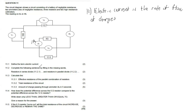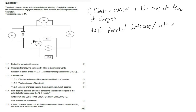Then 11.2 says complete the following sentence by filling in the missing words. Resistors in series divide the potential difference or the voltage — we call them voltage dividers or potential difference dividers. And resistors in parallel divide the current, so we say they are current dividers.